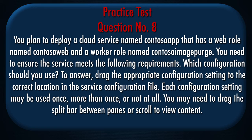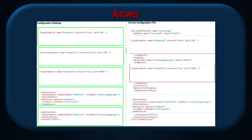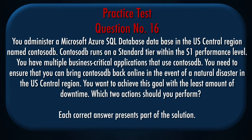You may need to drag the split bar between panes or scroll to view content. Question number 16. You administer a Microsoft Azure SQL Database in the U.S. central region named ContiSowDB. ContiSowDB runs on a standard tier within the S1 performance level. You have multiple business critical applications that use ContiSowDB. You need to ensure that you can bring ContiSowDB back online in the event of a natural disaster in the U.S. central region. You want to achieve this goal with the least amount of downtime. Which two actions should you perform? Each correct answer presents part of the solution.